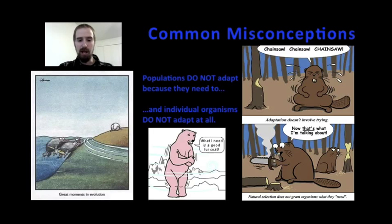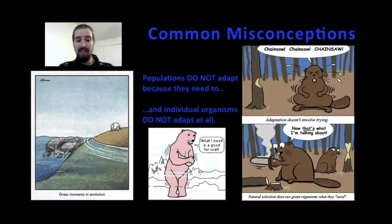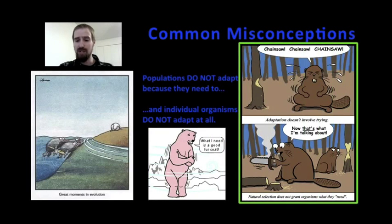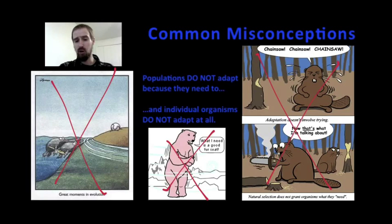These are common misconceptions: that individuals can adapt, that evolution happens because organisms need it to happen, and that evolution somehow gives organisms exactly what they need to survive. But natural selection acts upon the traits and abilities that an organism already has. It doesn't give organisms the traits that they need — and these fish certainly aren't going to grow legs and evolve to walk on land, because that's just not how it works.